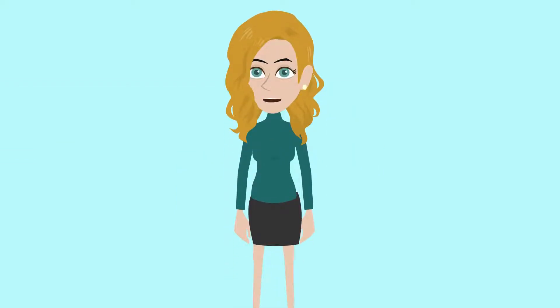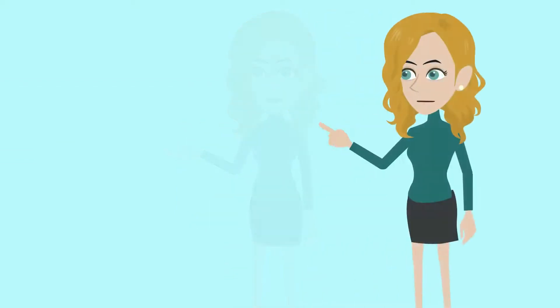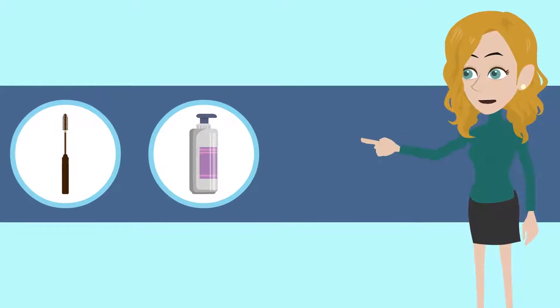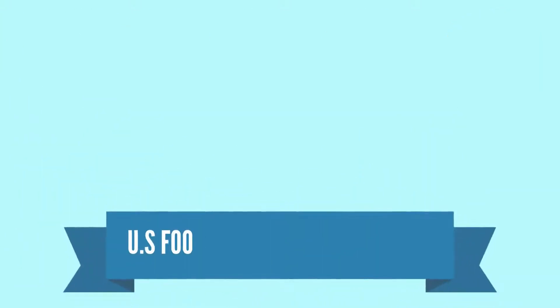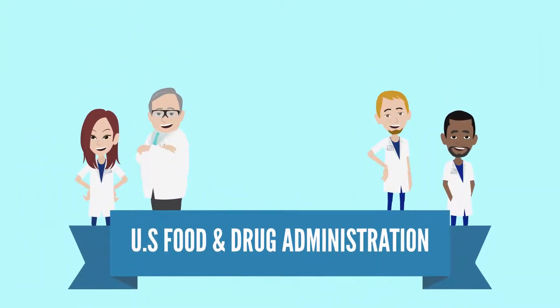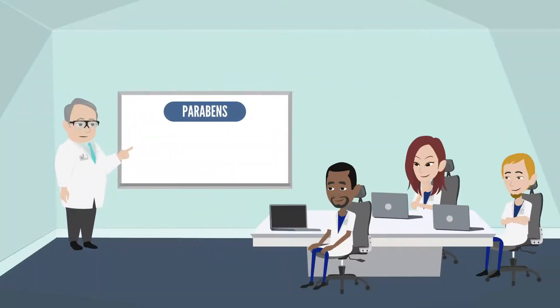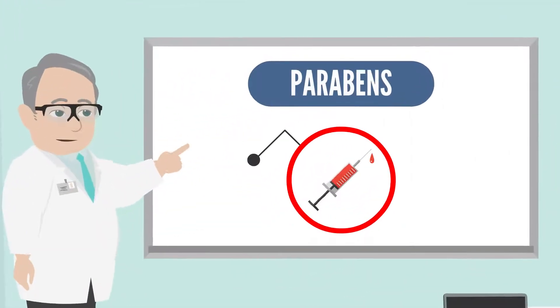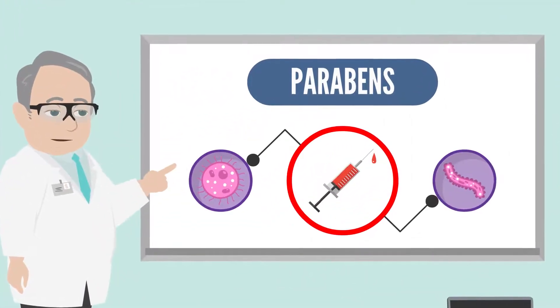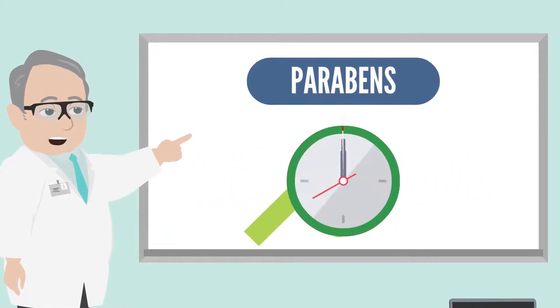Parabens are widely used in thousands of personal care products, from mascaras, body lotions to deodorants. According to the U.S. Food and Drug Administration, FDA, they are used as a cheap preservative to stop harmful bacteria and mold growing in the products to extend its shelf life.